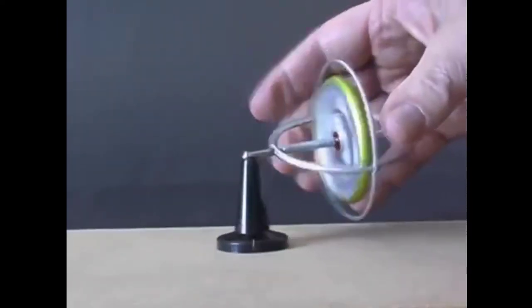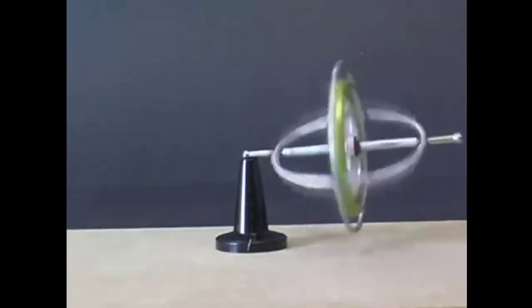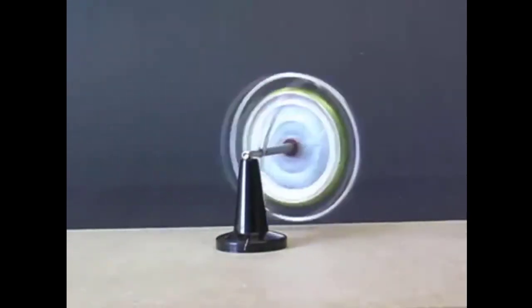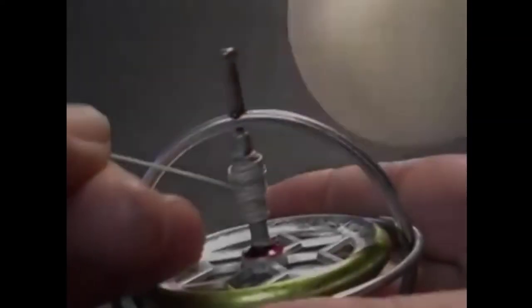This interesting behavior is difficult to explain. Physicists have determined that a rotating wheel has angular momentum, similar to the momentum that a stone flying through the air has. To change the direction of the stone requires a force.